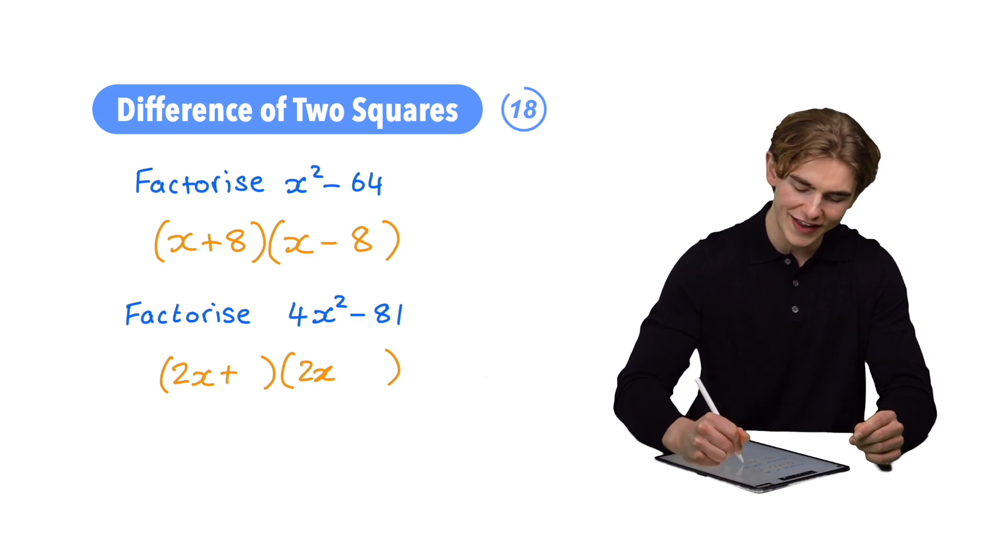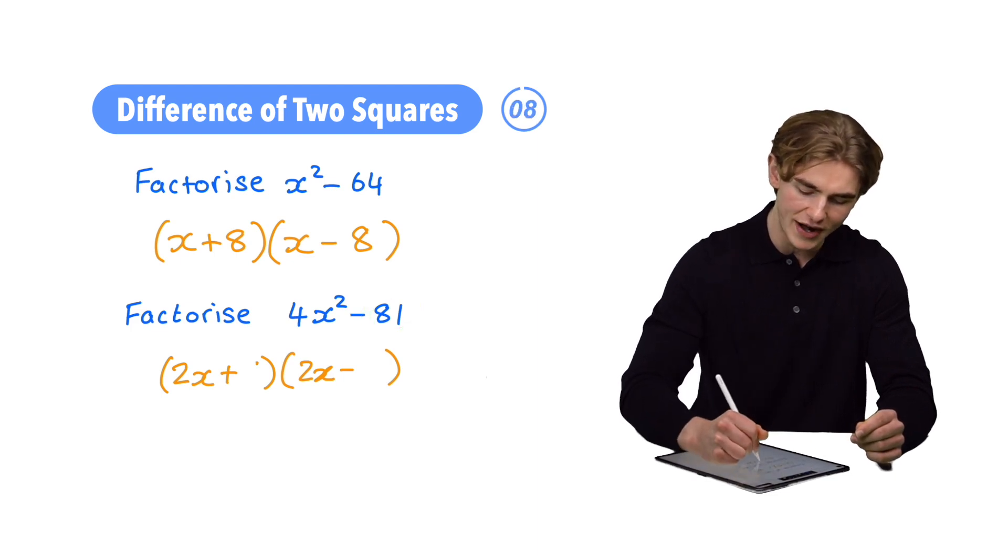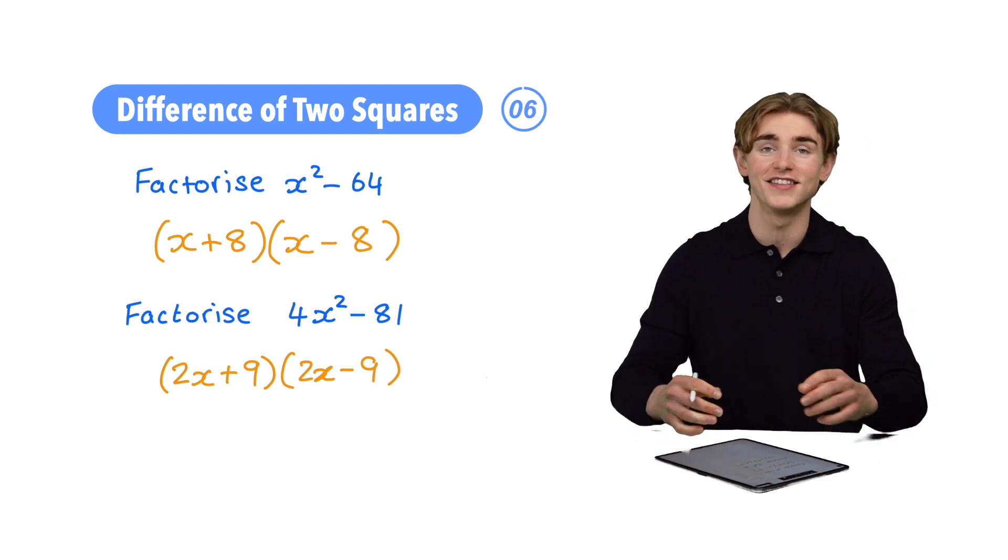Then we're going to write a plus in the first bracket and a minus in the second. Then we're going to take the square root of our second number in our expression. The square root of 81 is going to be 9, so we're going to have plus 9 in the first and minus 9 in the second.